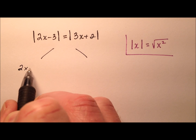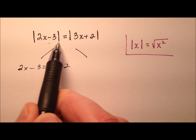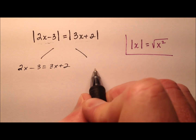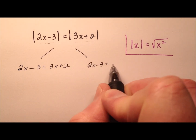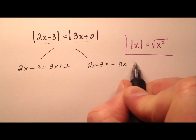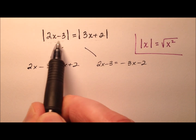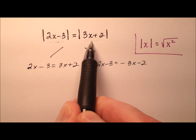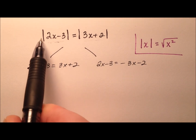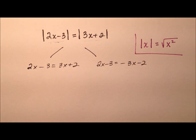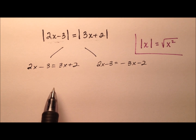I need to take when 2x minus 3 equals 3x plus 2 — so this is positive and this is positive. And then I need to take it where 2x minus 3 is positive but this one's negative, so negative 3x minus 2. We could also do where this one's negative and this one's positive, and negative and negative, but we're just basically duplicating these because there are no values outside the absolute value expressions. In the second example, I'll get more into that.